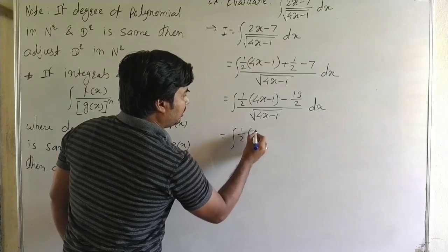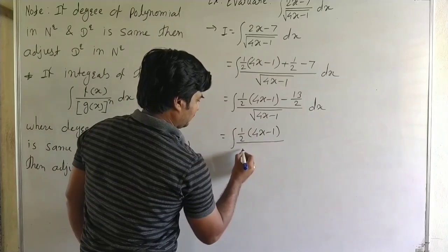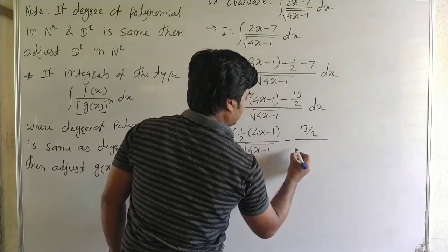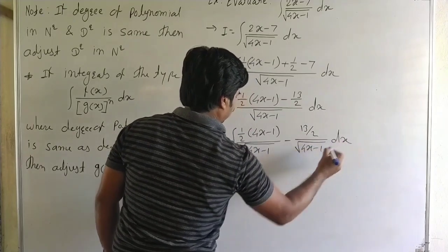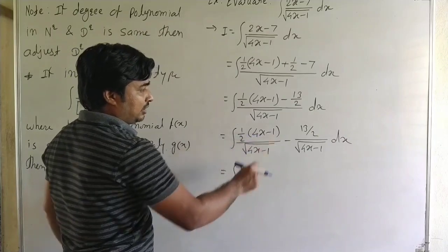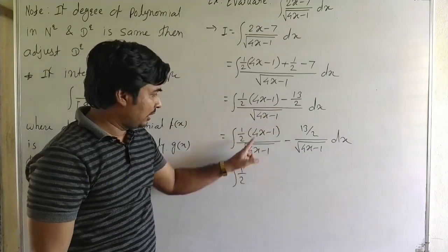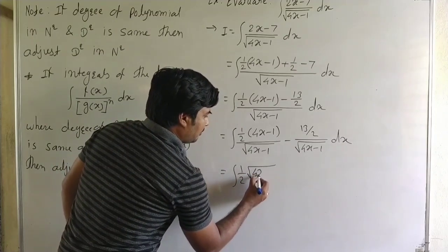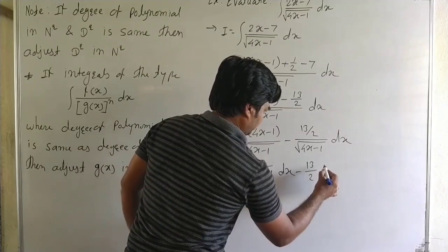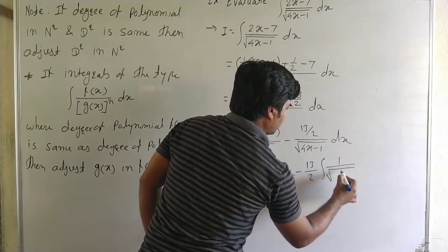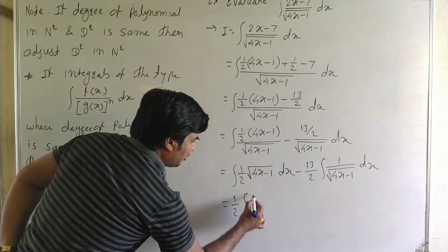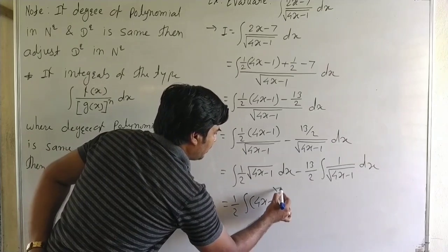Separating: integral of (1/2)(4x−1) upon √(4x−1)  minus  (13/2) upon √(4x−1) dx. The first part simplifies: (4x−1)/√(4x−1) = √(4x−1), so it becomes (1/2)∫√(4x−1) dx. The second part is −(13/2)∫(4x−1)^(−1/2) dx. Both integrals are of the form (ax+b)^n.